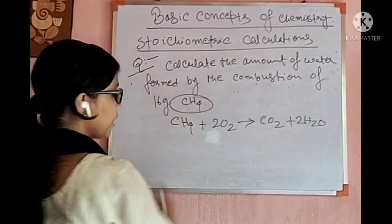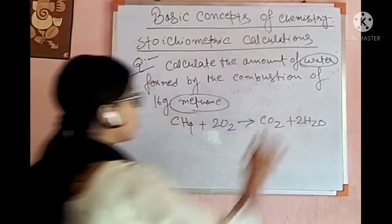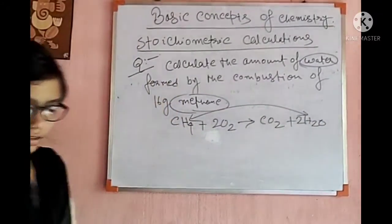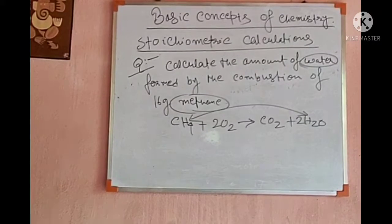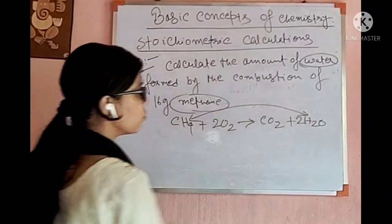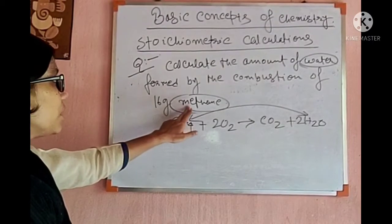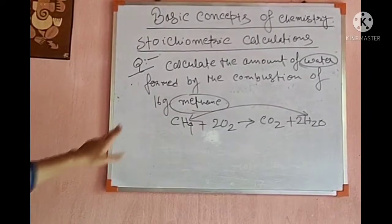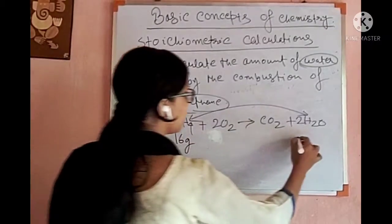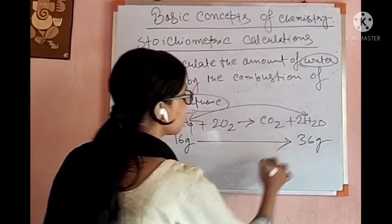The question is about methane and water, so find the relationship between these two and eliminate the others. Since the amount of methane is given in terms of grams, apply the fourth method — with respect to mass. From the balanced equation, the molecular mass gives 16 grams of methane producing 36 grams of water. So 16 grams of methane gives 36 grams of water, and that is the answer.